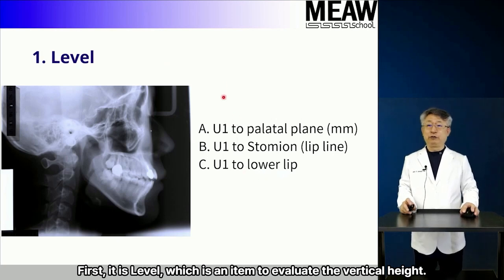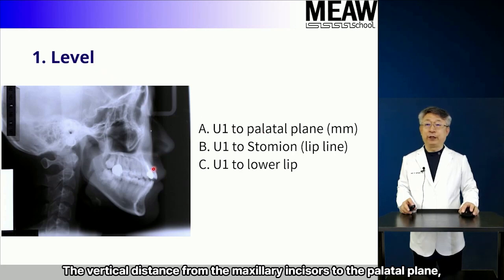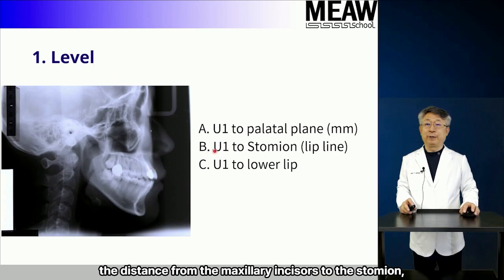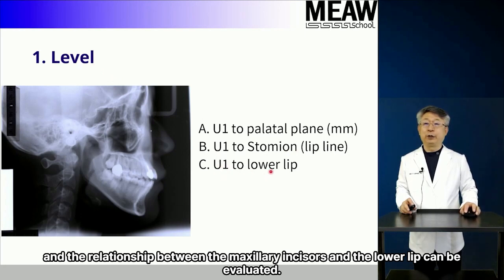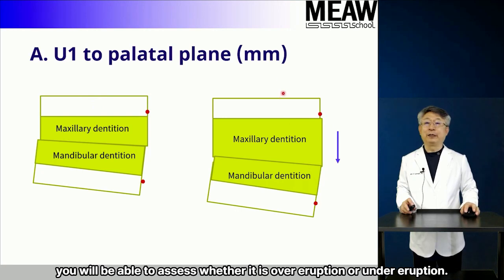First is level, which is an item to evaluate the vertical height. The vertical distance from the maxillary incisors to the palatal plane, the distance from the maxillary incisors to the stomion, and the relationship between the maxillary incisors and the lower lip can be evaluated. By measuring the distance from the palatal plane to the incisor edge of the maxillary central incisor, you will be able to assess whether it is over-eruption or under-eruption.